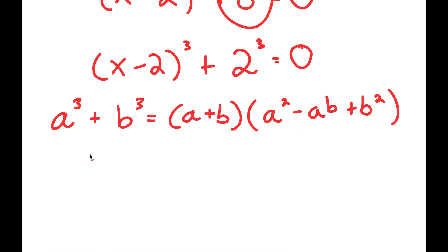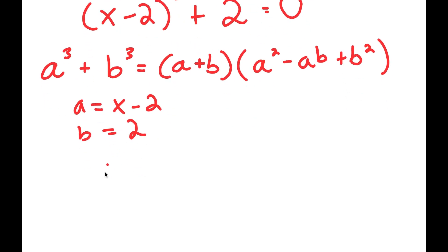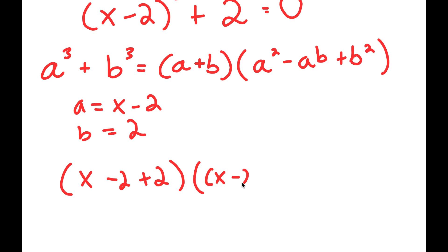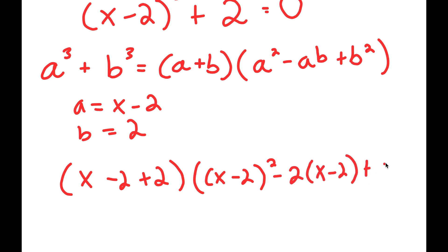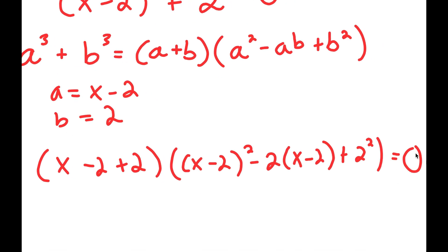So in this case, a is equal to x minus 2 and b is equal to 2. So I get x minus 2 plus 2 times x minus 2 squared minus 2 times x minus 2 plus 2 squared, and this is equal to 0.